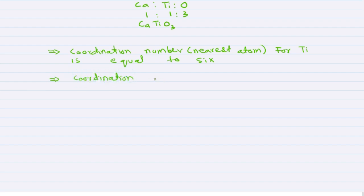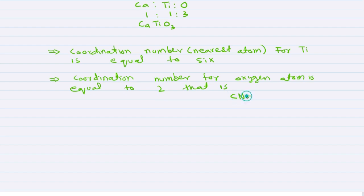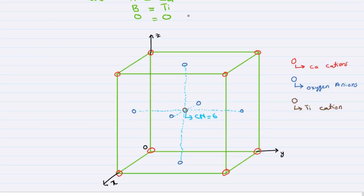The coordination number for the oxygen atom is equal to two. There will also be a titanium atom at the center of the cube located above this cube, so these two titanium atoms are nearest to the oxygen atom, giving a coordination number of two. Similarly, considering a titanium atom at the center of the cube to the left, again these two titanium atoms are nearest to the oxygen atom, so the coordination number of oxygen is equal to two.